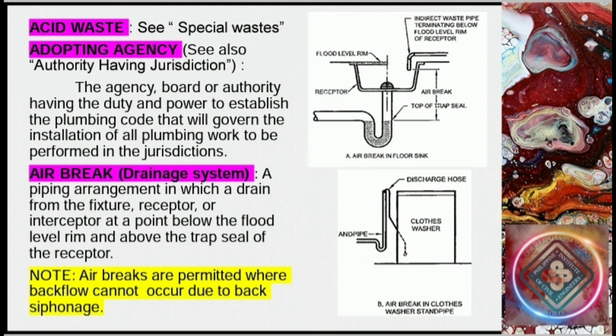Acid waste: see special waste. Adopting agency: see also authority having jurisdiction — the agency, board, or authority having the duty and power to establish the plumbing code that will govern the installation of all plumbing work to be performed in their jurisdictions.